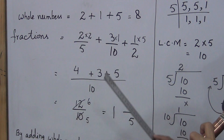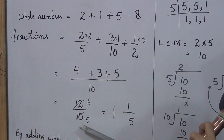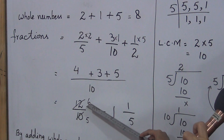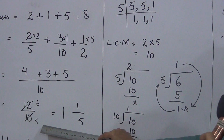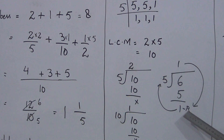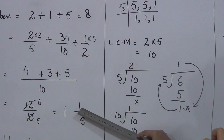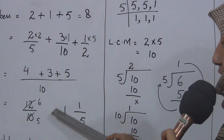Now 6 upon 5 is an improper fraction, where the denominator is smaller and the numerator is bigger. In the case of an improper fraction, we can convert it into a mixed number. The denominator is always the divisor. Numerator 6 divided by 5: 5 goes once with remainder 1. The quotient is the whole number, the remainder is the numerator, and the divisor is the denominator. So 6 upon 5 equals 1 whole number 1 upon 5.